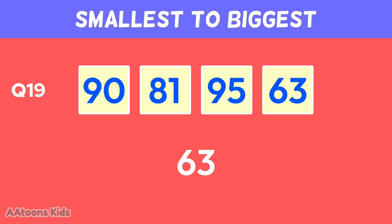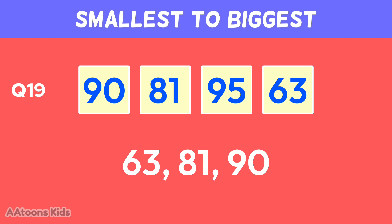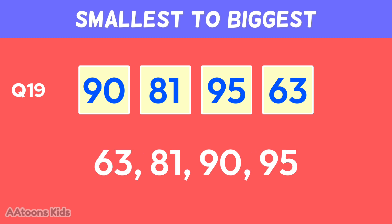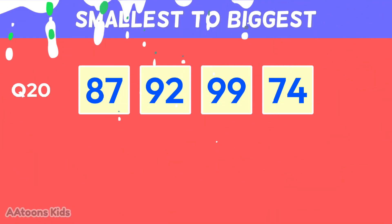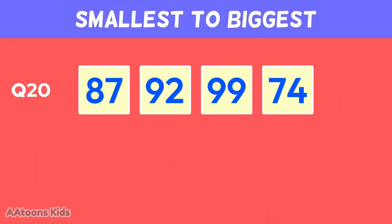Arrange these numbers from smallest to biggest: sixty-one, seventy-four, eighty-eight, ninety-one. Arrange these numbers from smallest to biggest: sixty-three, eighty-one, ninety, ninety-five.